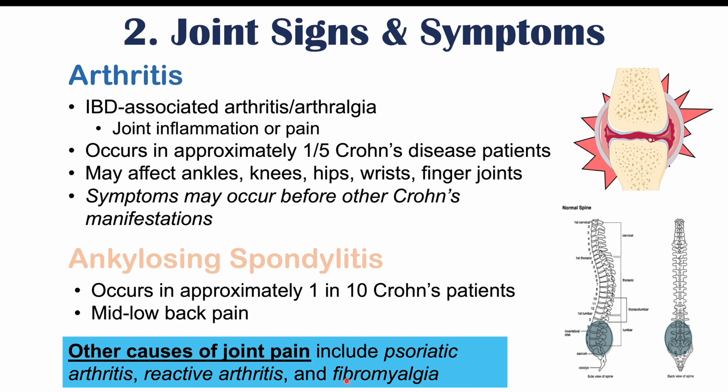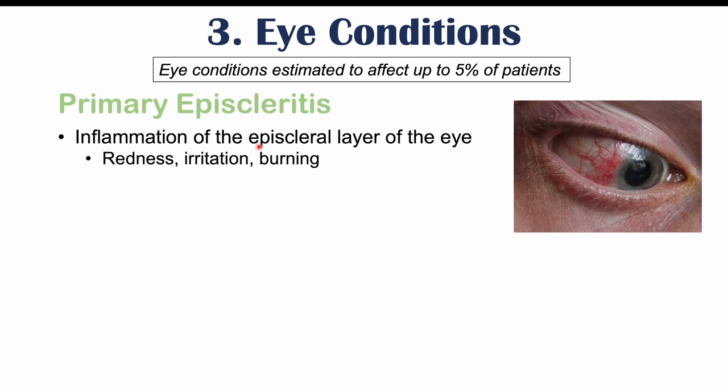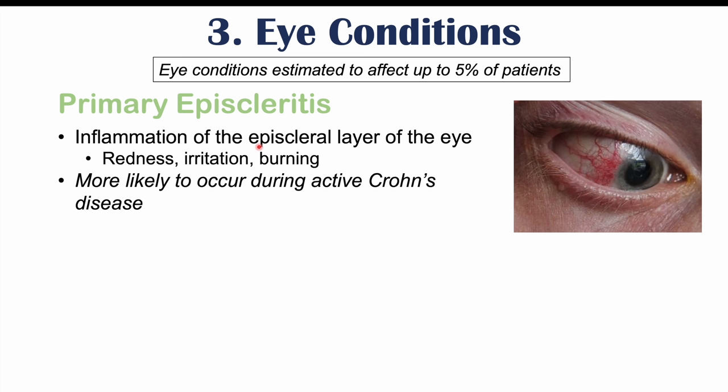Another category of atypical findings in Crohn's disease is eye conditions, estimated to affect up to 5% of patients. One condition is primary episcleritis — inflammation of the episcleral layer of the eye — which leads to redness, irritation, and burning. This condition is more likely to occur during active Crohn's disease, and when the gastrointestinal symptoms go into remission, this eye condition often resolves as well.